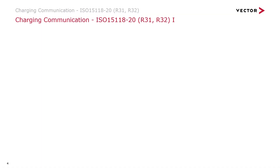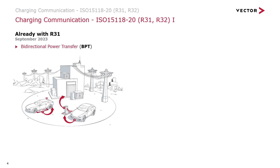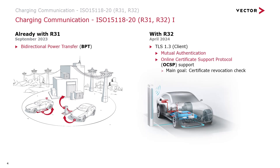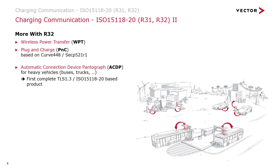What did we achieve in charging communication? Already back in R31, we achieved support of bi-directional power transfer. Now with R32, we added support for the client implementation of TLS 1.3. This allows for mutual authentication, and via Online Certificate Status Protocol (OCSP), it is now possible to check if a certificate has been revoked. Furthermore, with R32, we implemented the wireless power transfer option and enhanced our plug-and-charge solution with the algorithms that had been missing until now. These four, together with the automatic connection device pantograph functionalities for heavy vehicles, lead to the first product in the industry that fully supports all ISO 15118-20 standard defined use cases.